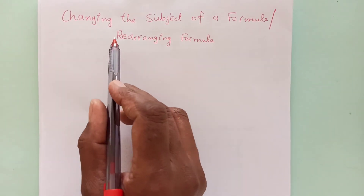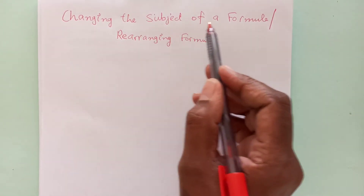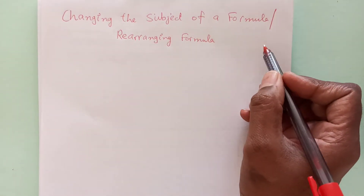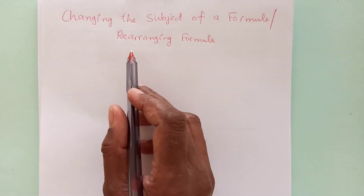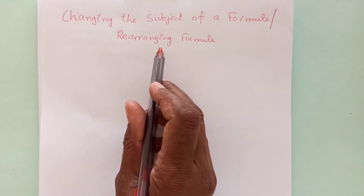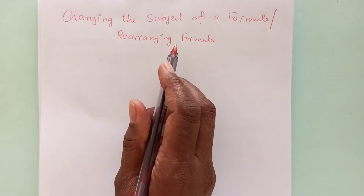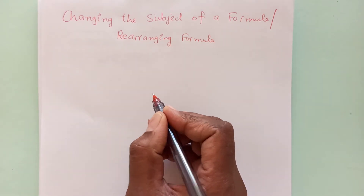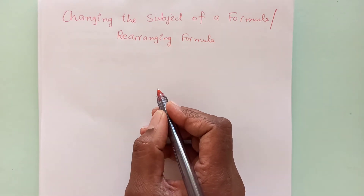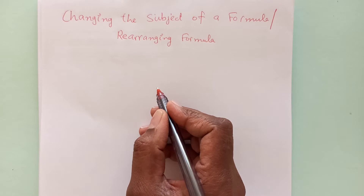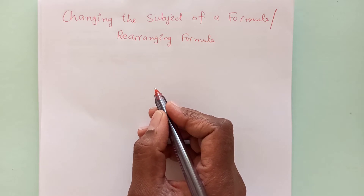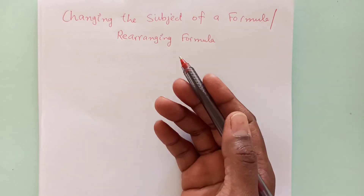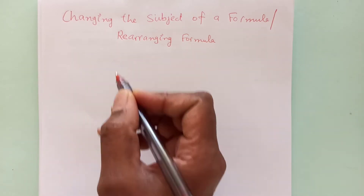Let's do changing the subject of a formula today. It is also called rearranging a formula. When changing the subject of a formula, we arrange the formula so that we have a different subject.